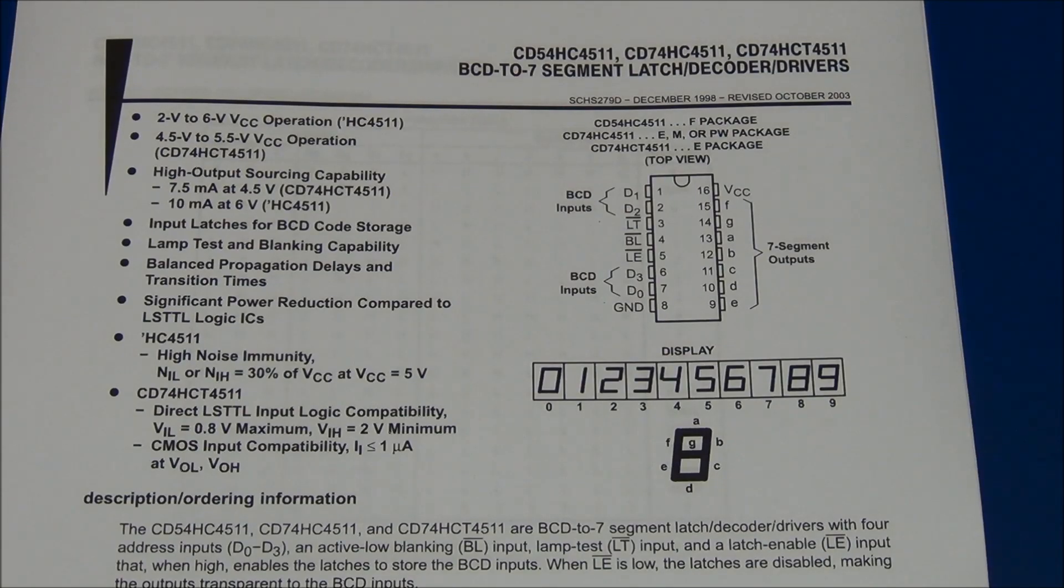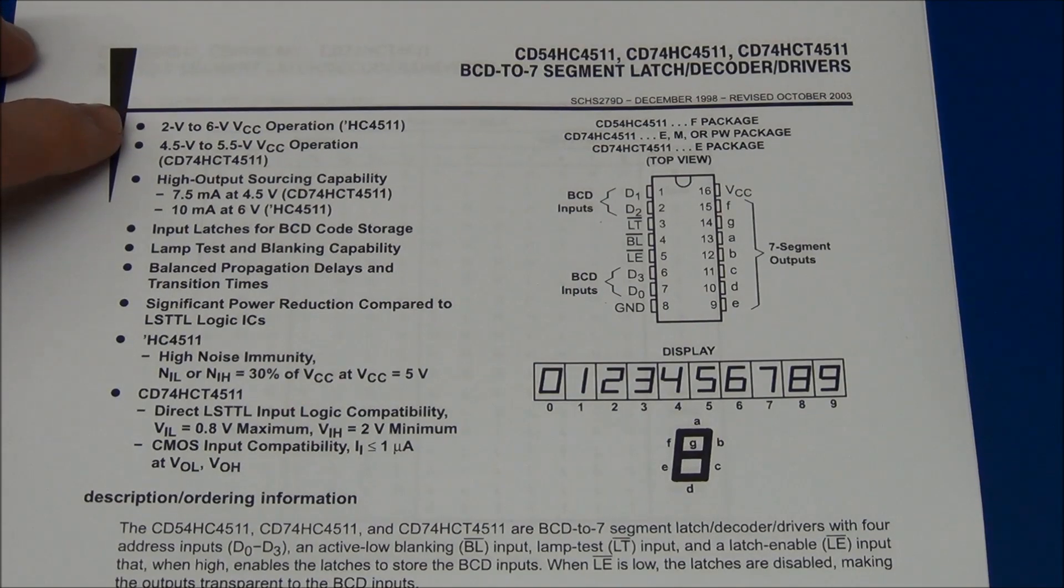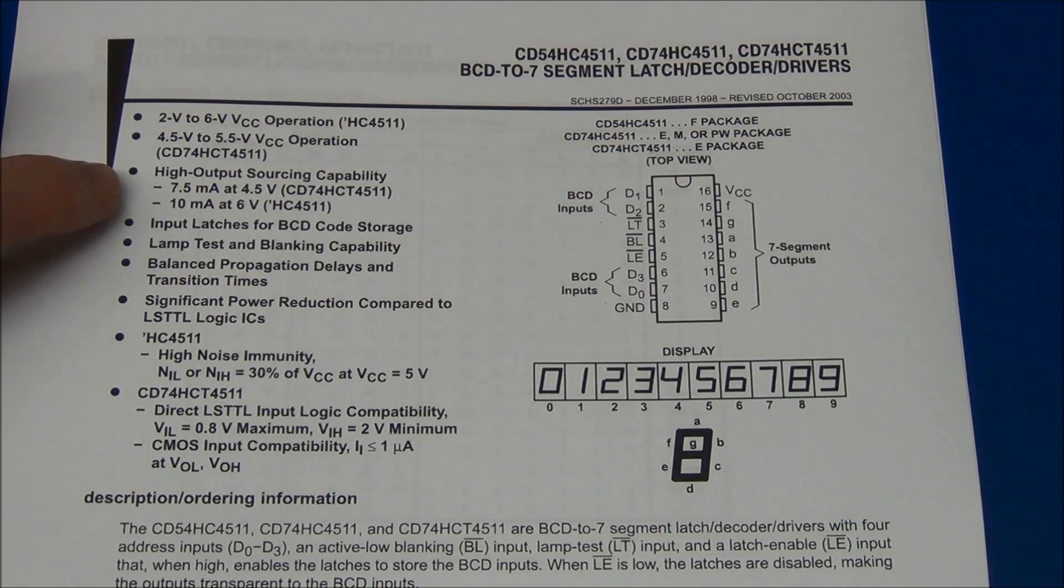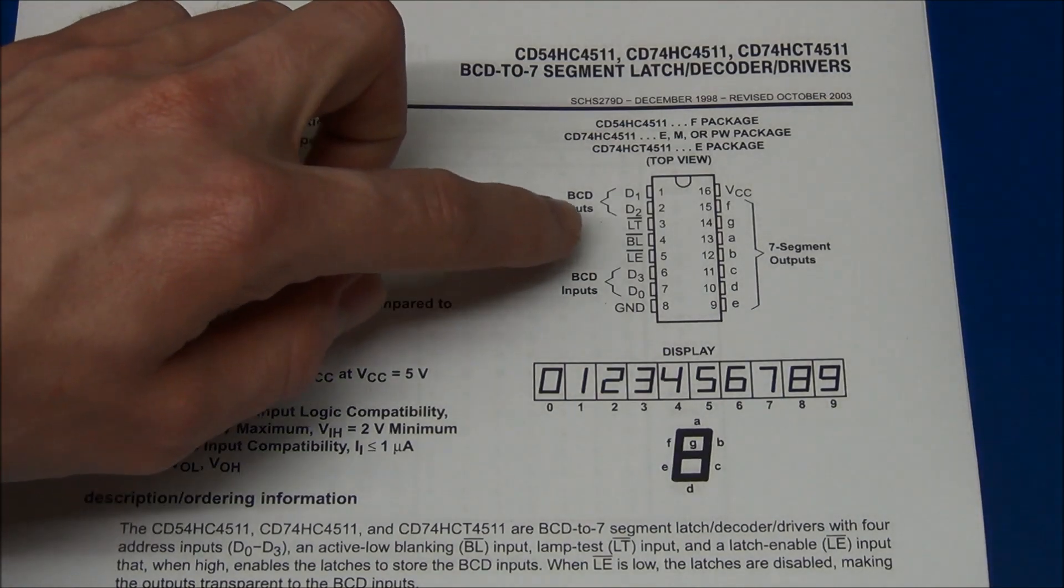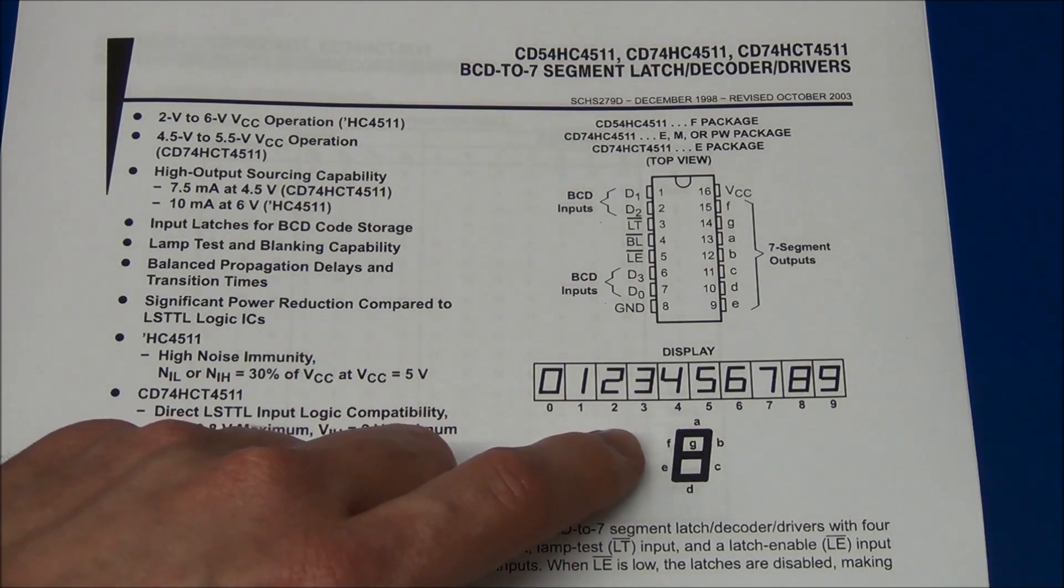And here is the data sheet for the device. This will tell us the operating voltages, the current sourcing capability, the pin assignments of the chip, and it will show us where the segments are located on the 7 segment display.